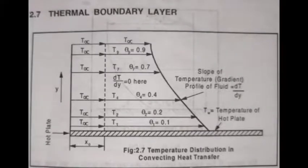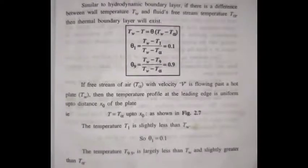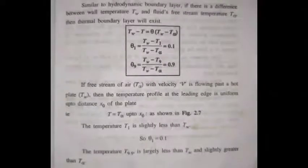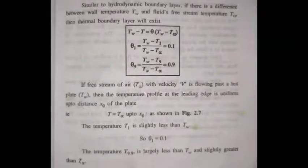In the x-direction, we see the temperature at distance x is equal to Tα. We can see a gradient — the temperature gradient relates to the hydraulic boundary layer. There is a difference between the wall temperature TW and the fluid free stream temperature Tα. If there is a difference between wall temperature TW and fluid free stream temperature Tα, then a thermal boundary layer exists.